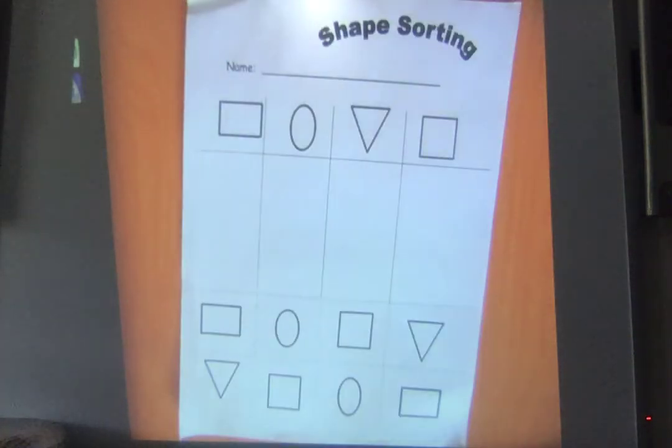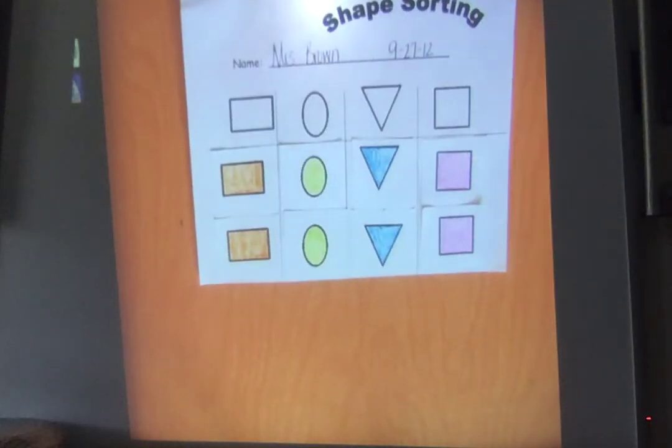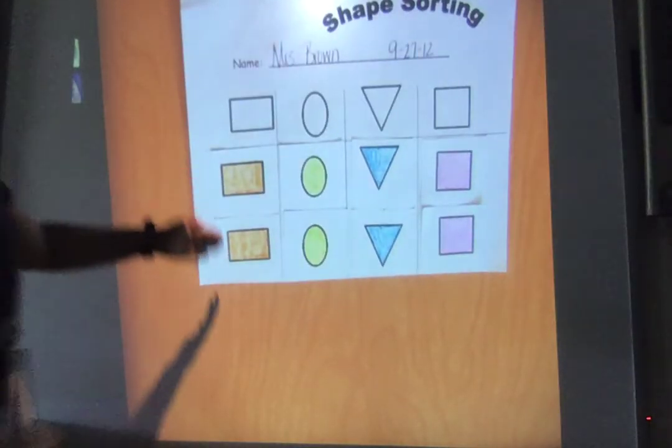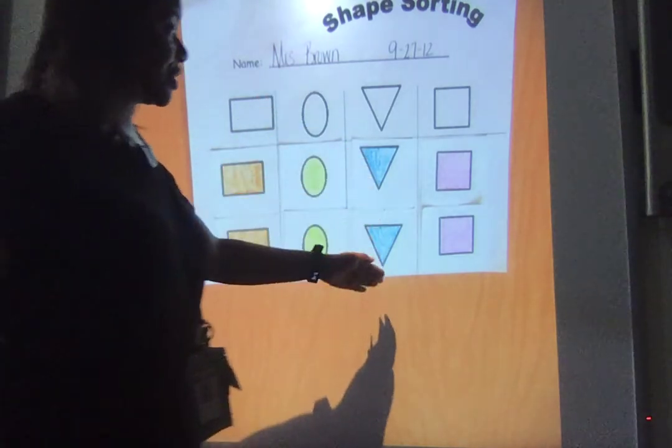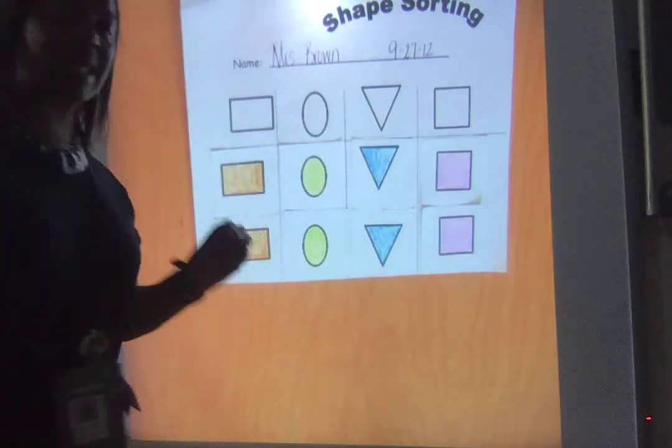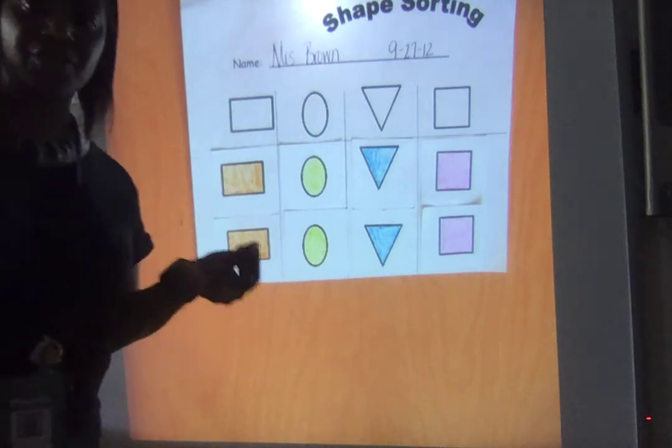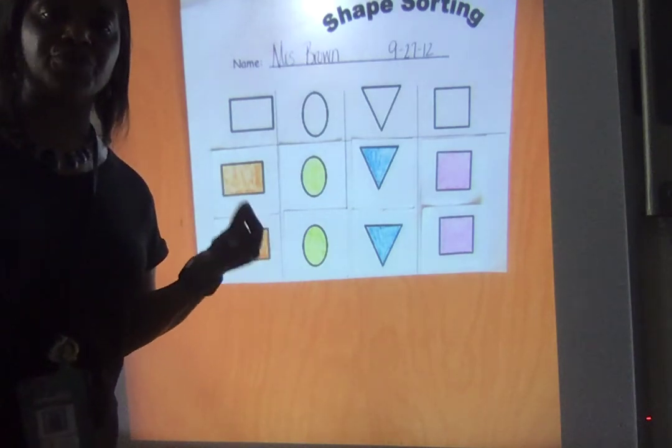Now, let me show you what it looks like when you're done. Okay? We want your best work. And there it is. Look what Mrs. Brown has done. She has all of her rectangles in a group, ovals in a group, triangles in a group, and squares.